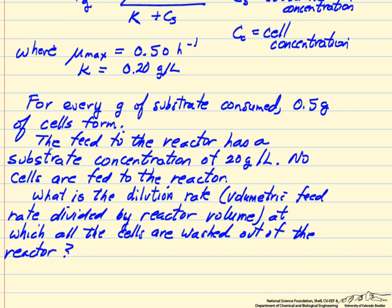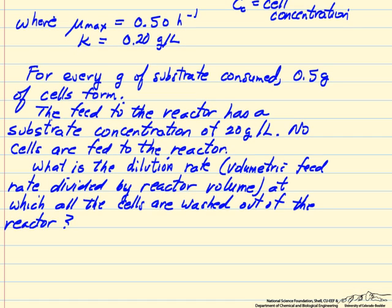The question is: what is the dilution rate—which is another way of saying what's the volumetric flow rate—such that we flush all the cells out of the reactor and our cell rate is zero? So this is the dilution rate where we have washout.